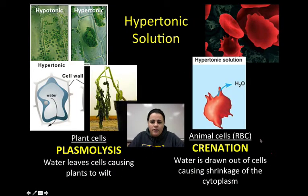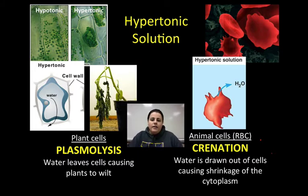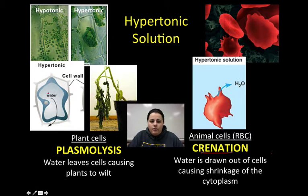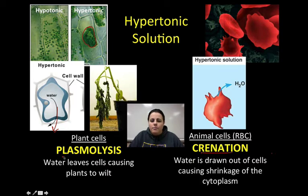Neither animal cells nor plant cells love to be in a hypertonic solution. Eventually, both will die if exposed to it because water is leaving both cells. In an animal cell, the cell membrane starts to shrivel up — the cell will crenate, or undergo crenation, and die. In plant cells, the central vacuole gets depleted of water and the cell membrane pulls away from the cell wall as water leaves. This causes the cell membrane to shrivel up inside the cell wall, which is called plasmolysis — a severe wilting of the plant that will lead to death.